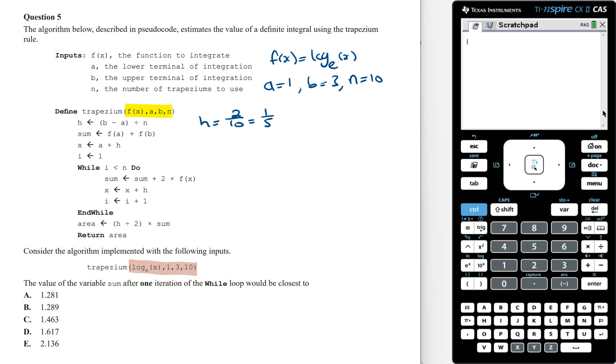The sum is then f(a) plus f(b), so sum equals log_e(1) plus log_e(3). Log_e(1) equals 0, so this becomes log_e(3).